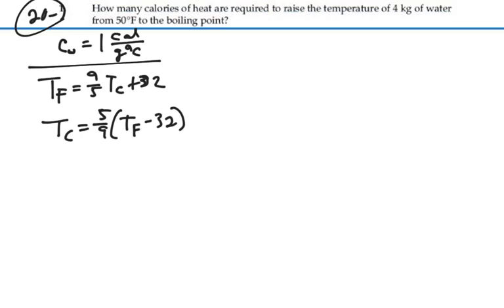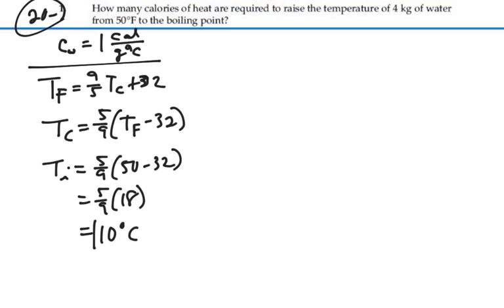So if we have the temperature of 50 degrees Fahrenheit, our initial temperature then would be 5 ninths times 50 minus 32, or 5 ninths times 18, which would be 10 degrees Celsius. That would be our initial temperature.